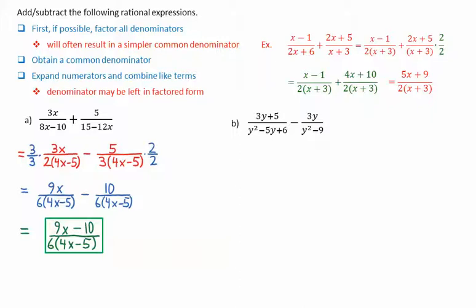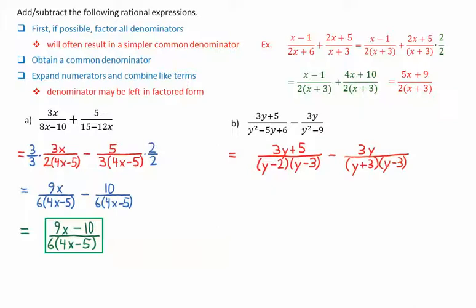For the second example, the first rational expression's denominator can be factored to y minus 2 times y minus 3. For the second rational expression, we have a difference of squares on the denominator, which factors to y plus 3 times y minus 3. The common denominator will therefore be y minus 2 times y minus 3 times y plus 3. For the first rational expression, we multiply top and bottom by y plus 3, and for the second, by y minus 2.